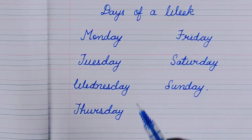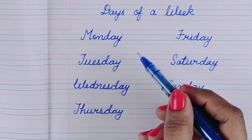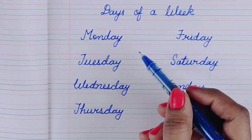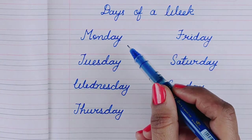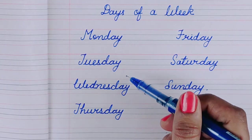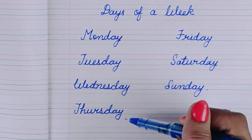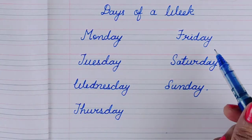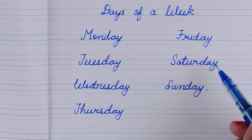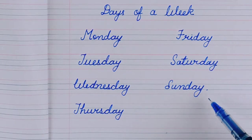So there are 7 days in a week: Monday, Tuesday, Wednesday, Thursday, Friday, Saturday, and Sunday.